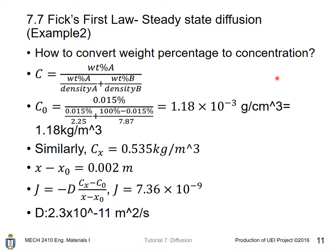7.87 is the density for iron. And we got C₀ equals this value. Convert the unit, we have this value. Using a similar approach, we have Cx.